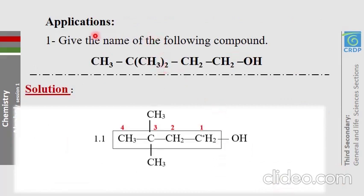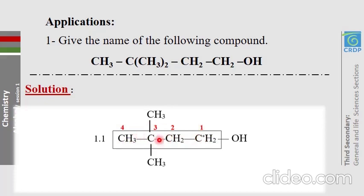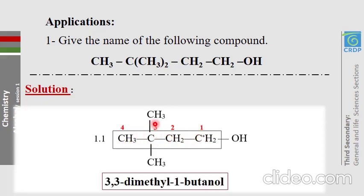Application 1: give the name of the following compound. Redraw it in a simpler way to show the branches. This alcohol has two branches. Locate the main chain, number it, and name it. The answer is 3,3-dimethyl-1-butanol — both methyl groups are on carbon number 3.